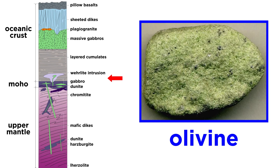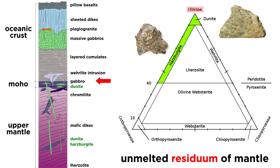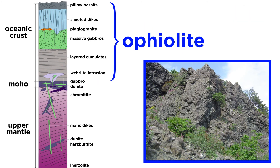Beneath the wherlite is another cumulate layer, composed mainly of olivine crystals that formed in the wherlite magma chamber and sank to the bottom. Finally, at the very bottom is the unmelted residuum of the original mantle, which is composed mainly of olivine-rich rocks.